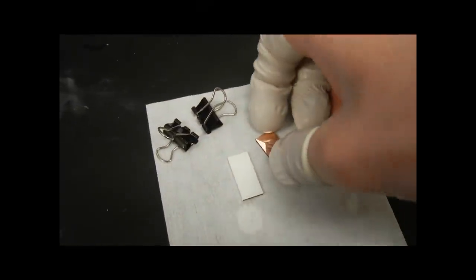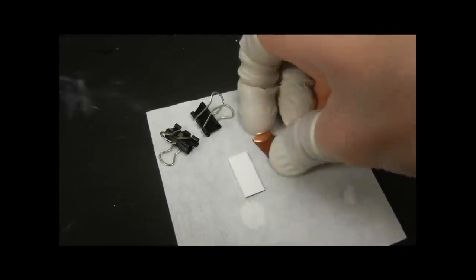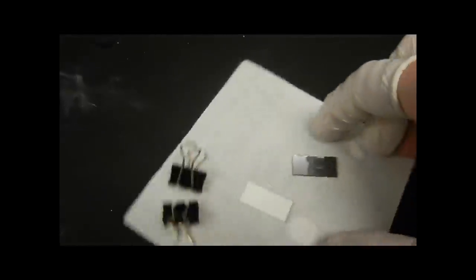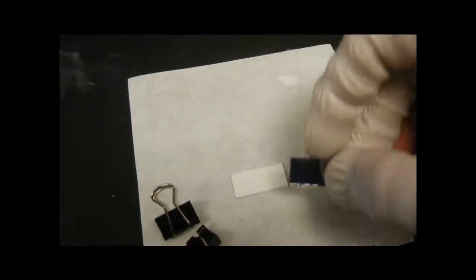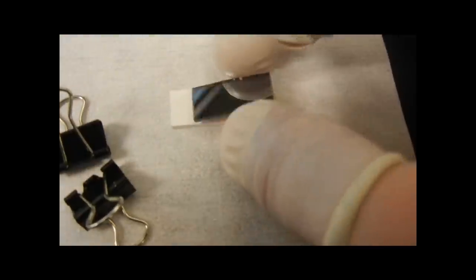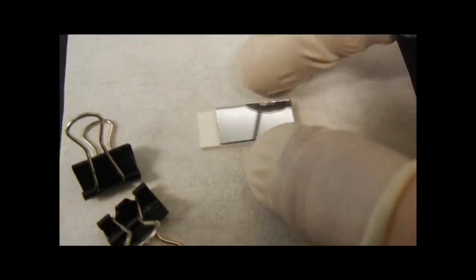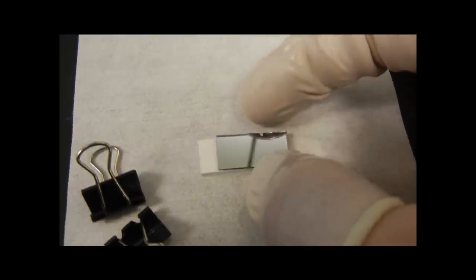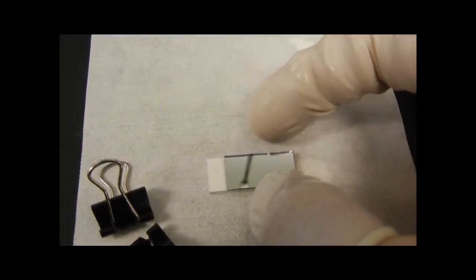So, we will take our other piece of copper, and we will carefully set it right on top, leaving a little bit of space on either side, so we can attach our electrodes to it, to measure the voltage output. So, once again, I'm going to set the camera down. Hopefully, you can kind of see this.